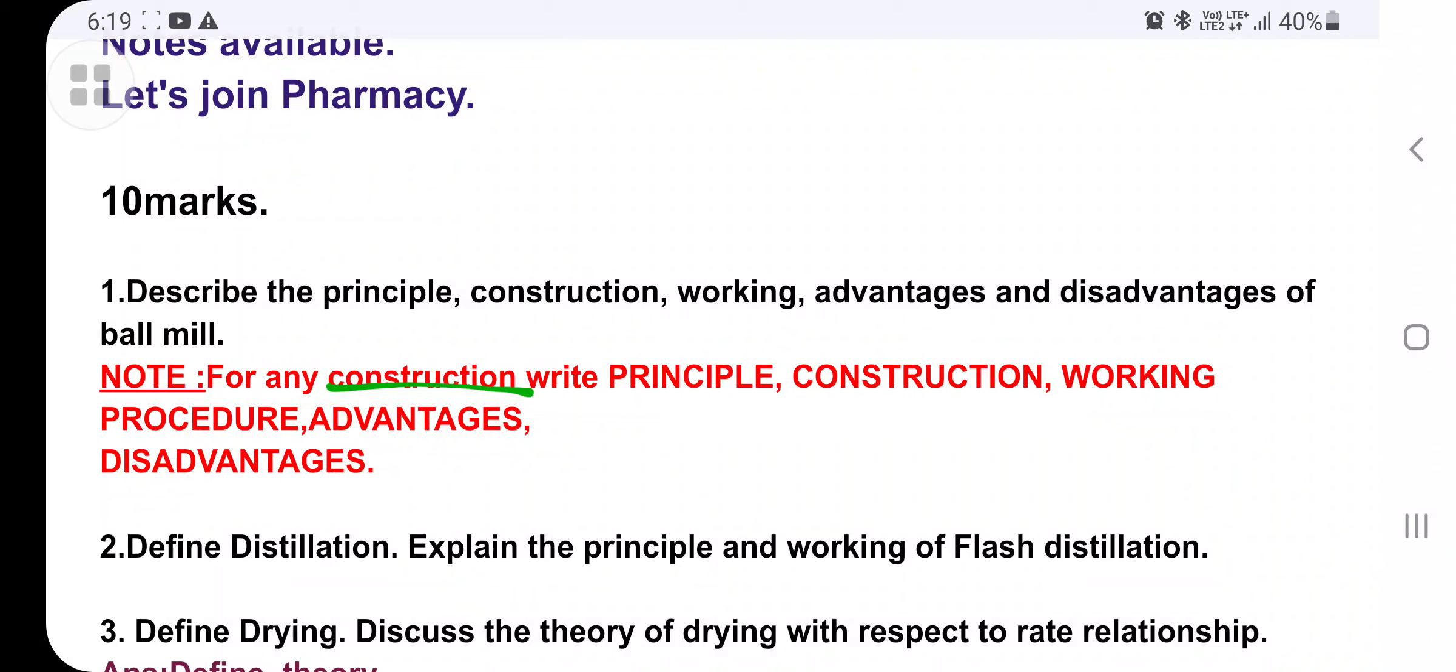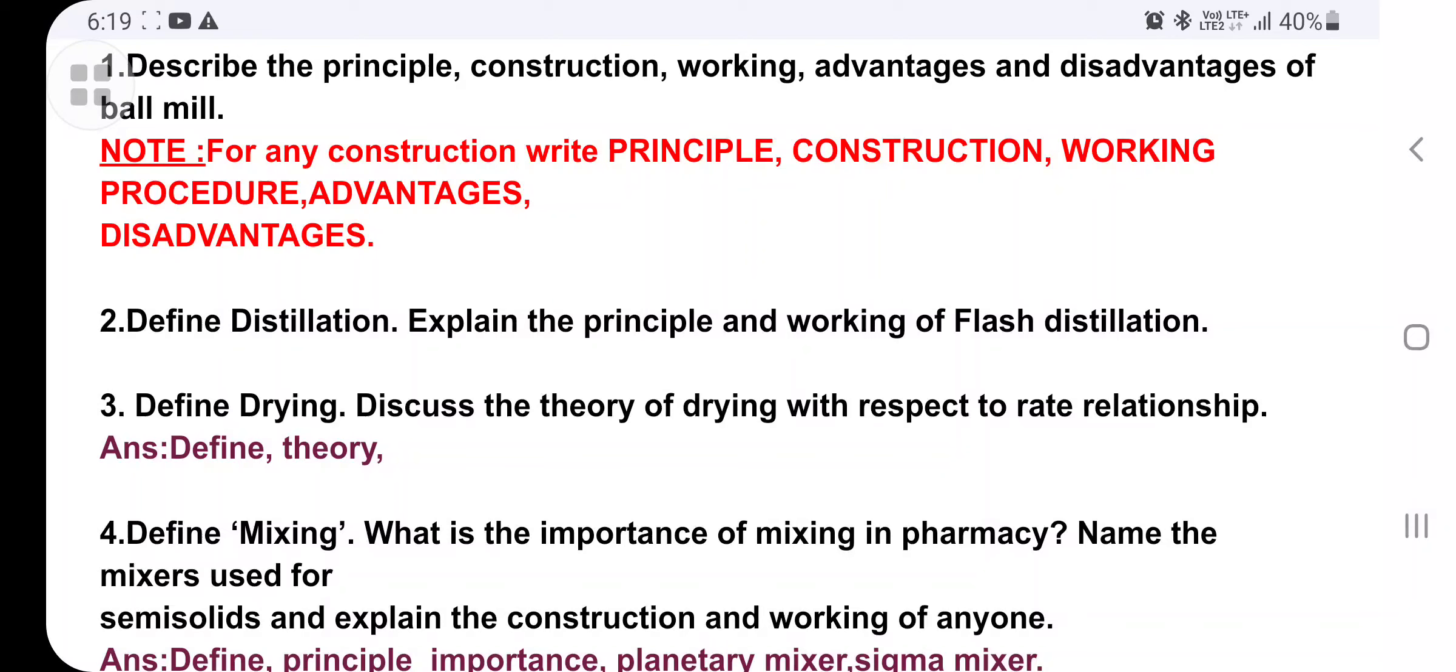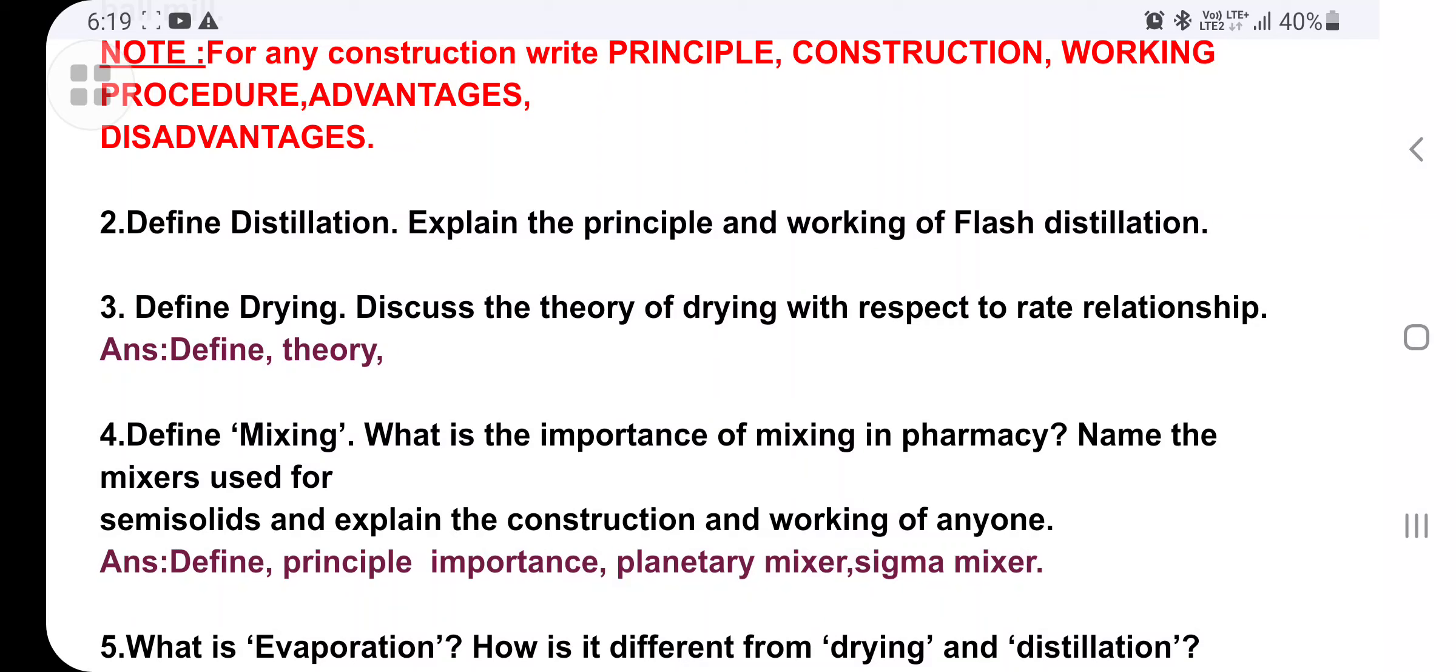Next one is define distillation, principle and working of flash distillation. Here also same, you have to maintain all principle, construction, working. Next one is define drying, theory of drying with respect to rate relation. Simple define and drying theory you have to write down here.